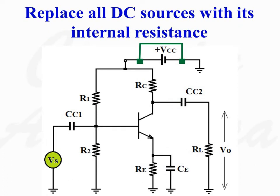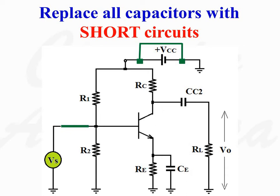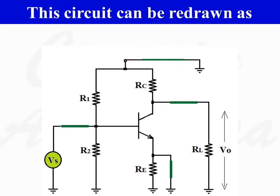The first step is to replace all DC sources with their internal resistance. In this circuit, there is only one DC source — the voltage source VCC — which is replaced with a short circuit. Next, replace all capacitors with short circuits. There are three capacitors, so all three capacitors are replaced with short circuits.